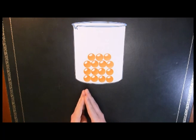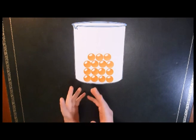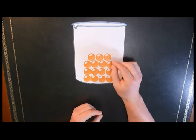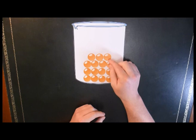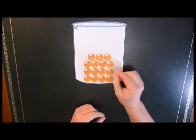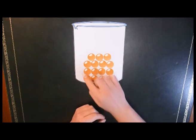The particle model has three main assumptions. Firstly, everything around us - solids, liquids, and gases - are made up of these tiny microscopic particles, and I've magnified them here just so you can see what's going on. Secondly, it assumes that these particles, even in a fixed position like this in a solid, are constantly moving, so they're constantly vibrating on the spot.